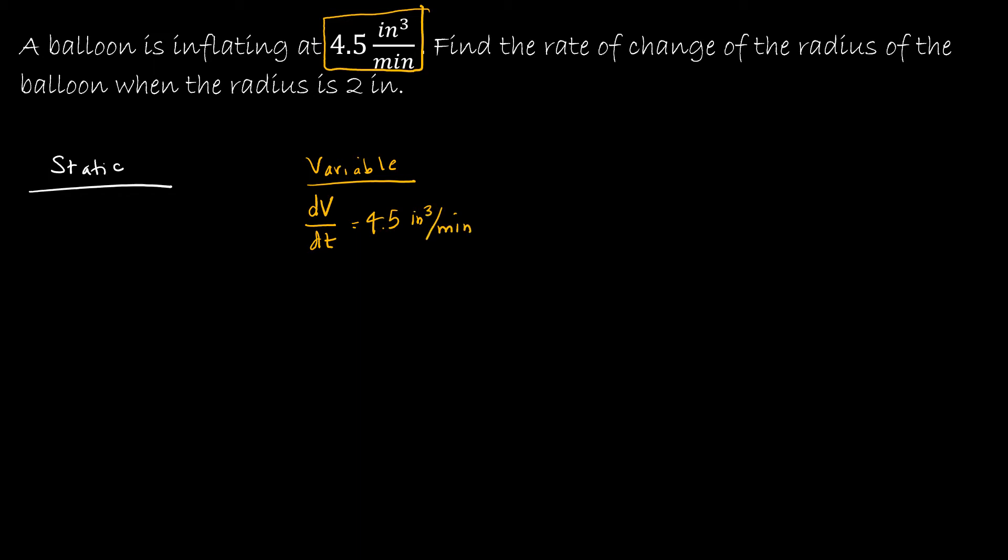Now remember that every time we have something on the variable side, we'll have something that relates to it on the static side. So this one is dV over dt, so that's going to be V something. And we'll come back to that at the end.